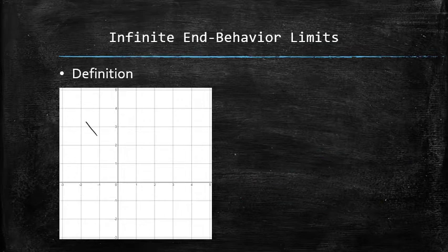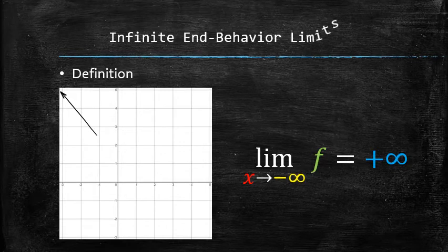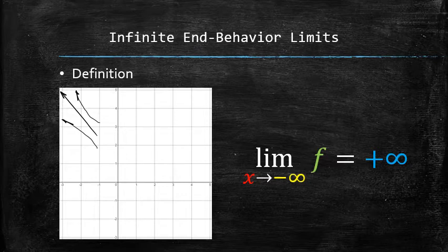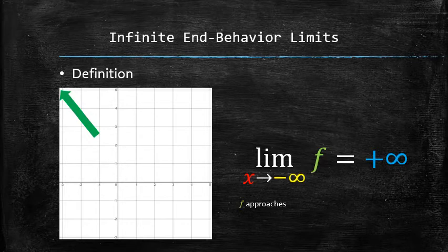We associate the following behavior with the following limit statement called an infinite end-behavior limit. Note that we do not suggest that the graph must approach positive infinity in any particular way — it can approach it faster or slower for different functions. Either of these behaviors are described with the same limit statement, and schematically can be expressed with an arrow pointing in the upper left corner of the graph. We say f approaches positive infinity as x approaches negative infinity.